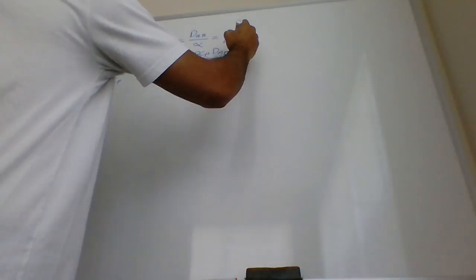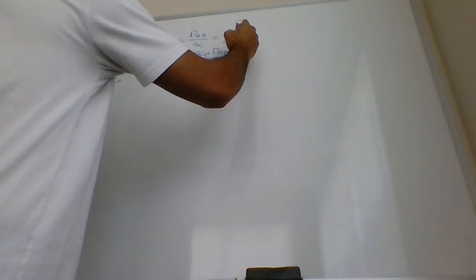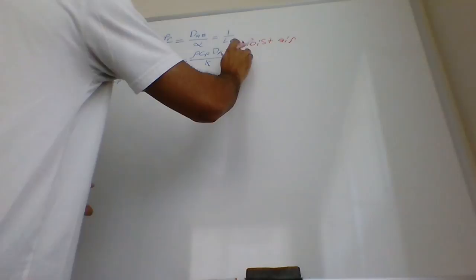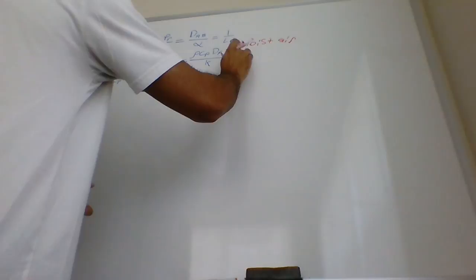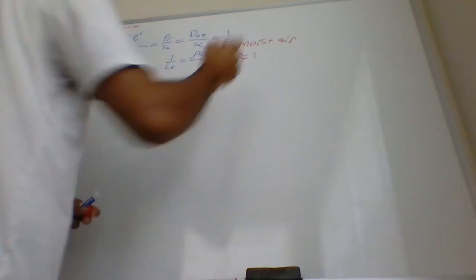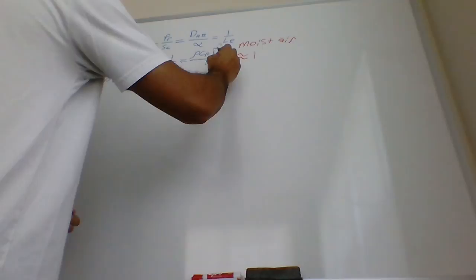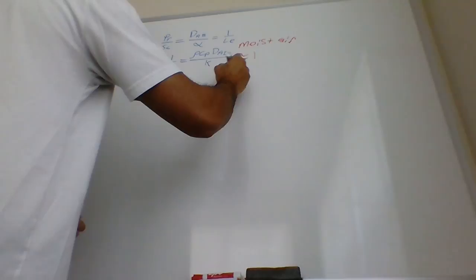When we're looking at the concept of moist air — specifically the wet bulb scenario where at the interface of the wet bulb you have moist air — this ratio becomes relatively 1. So if 1 over the Lewis number is approximately 1, we can isolate: diffusivity over thermal conductivity equals 1 over the volumetric heat capacity.